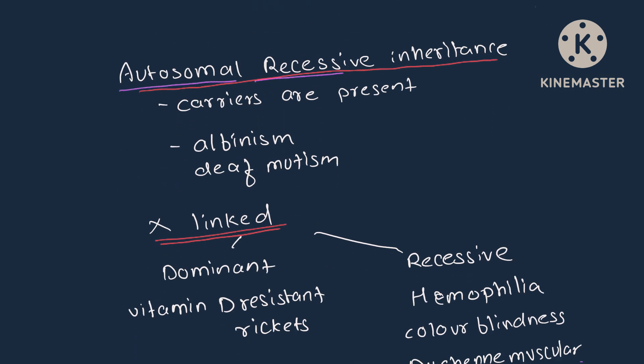In autosomal recessive inheritance, carriers are present. Examples are albinism and deaf-mutism.